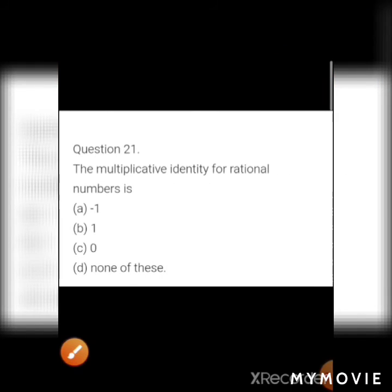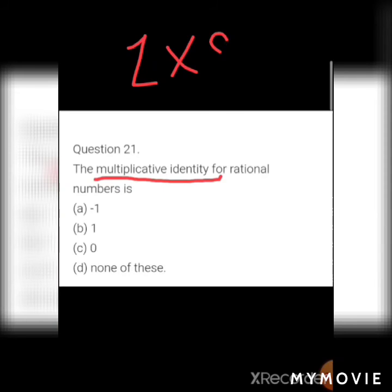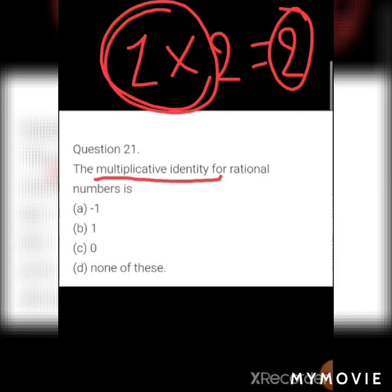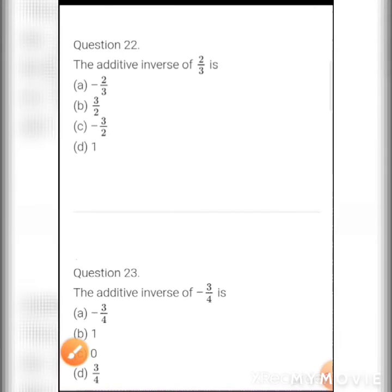MCQ 11: The multiplicative identity for rational numbers is? Options: a) −1, b) 1, c) 0, d) none of these. If you multiply 1 by any number you get the same number, so 1 is the multiplicative identity. Answer: b) 1.